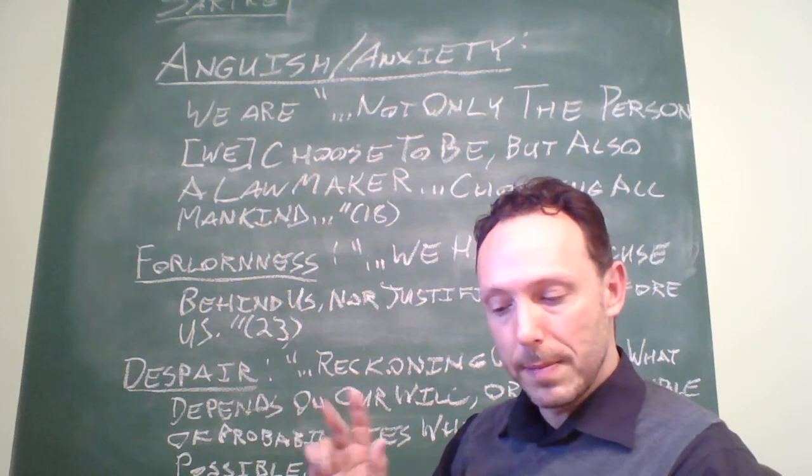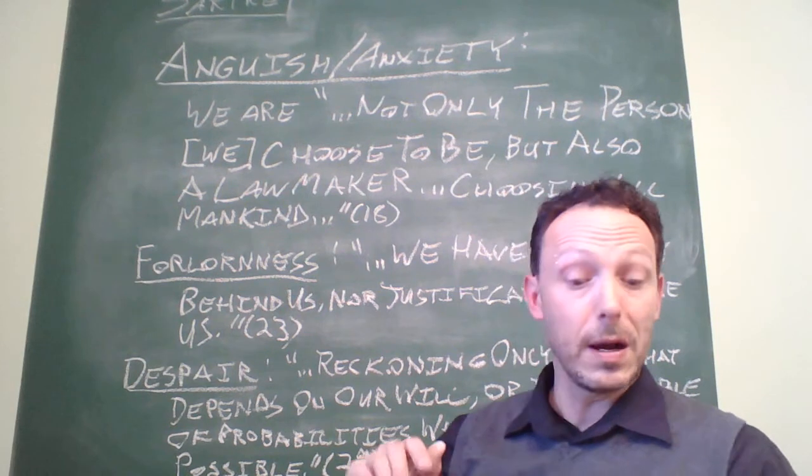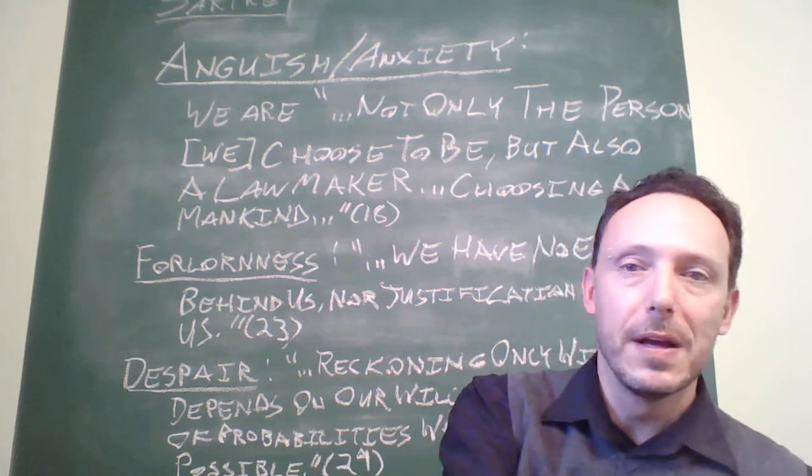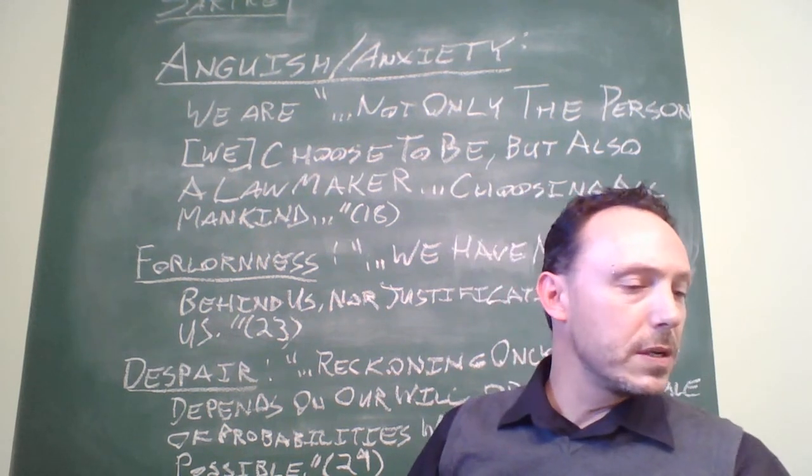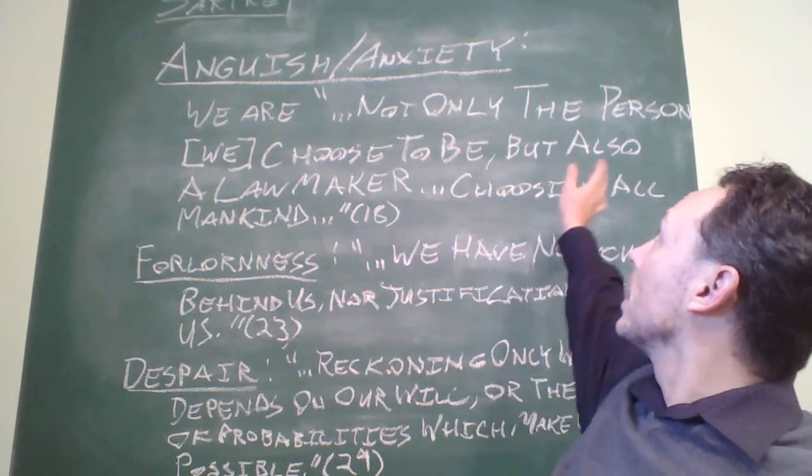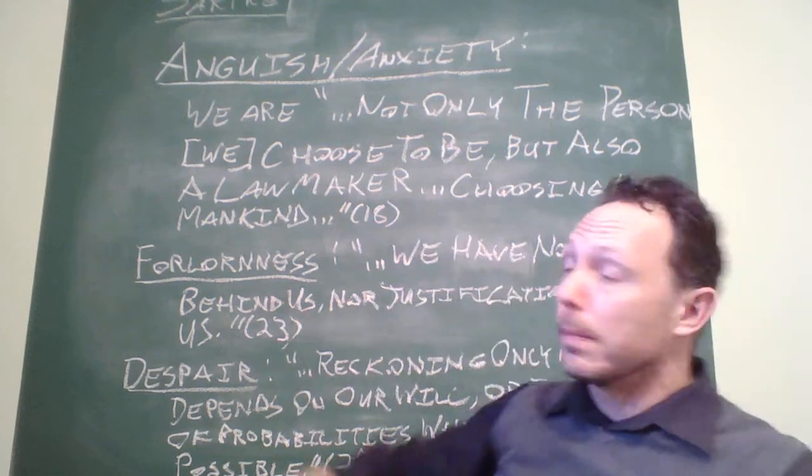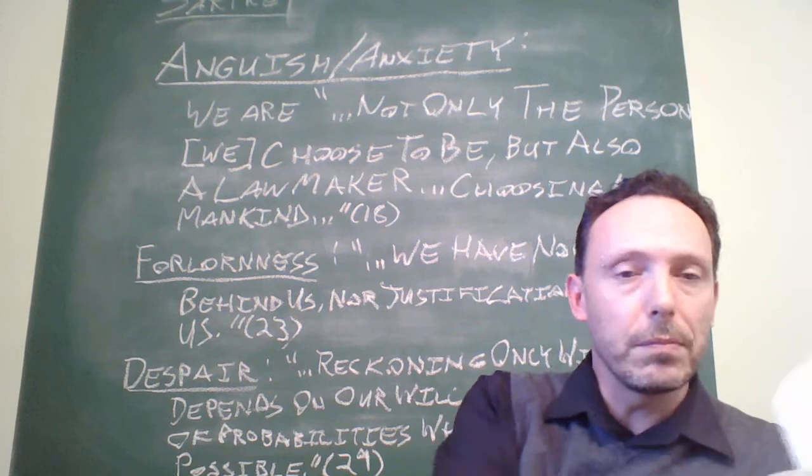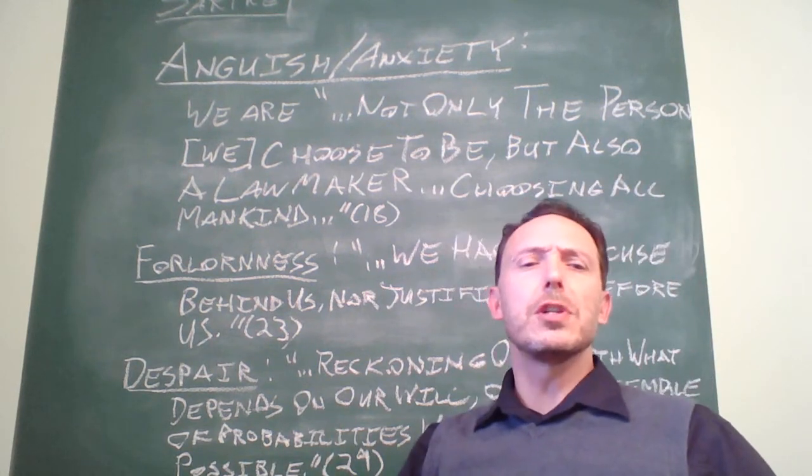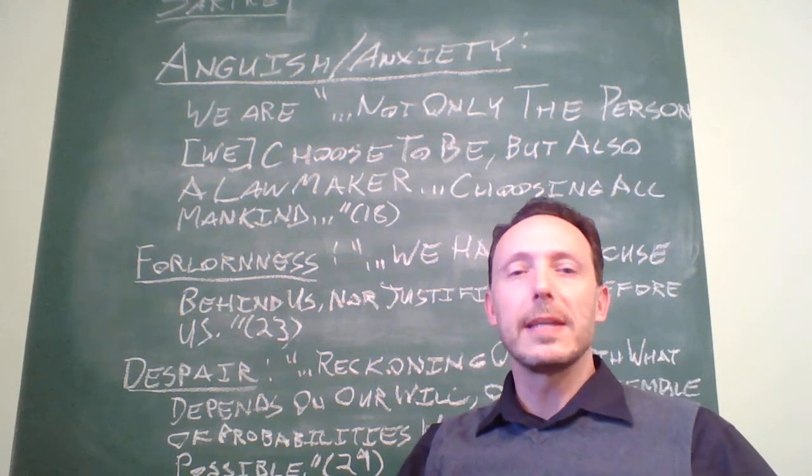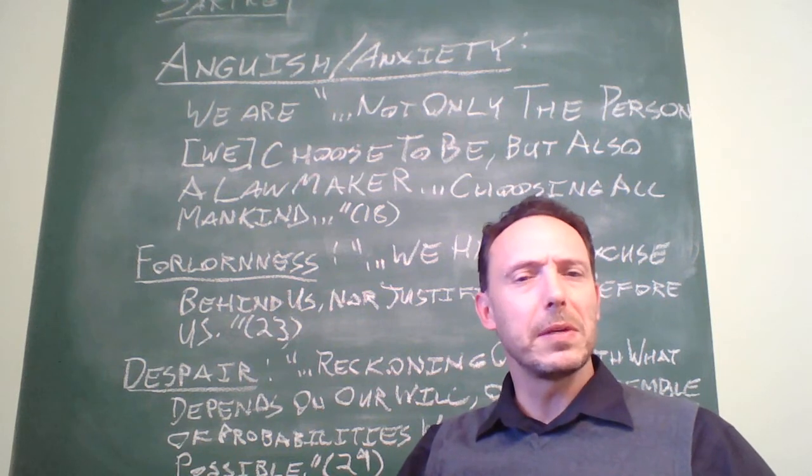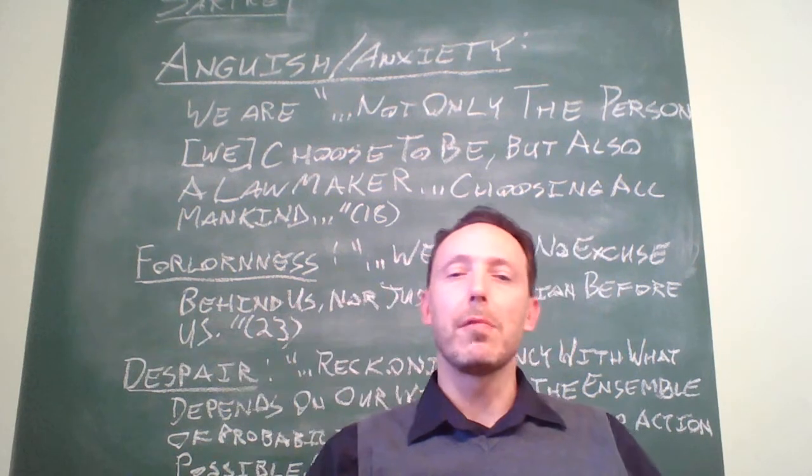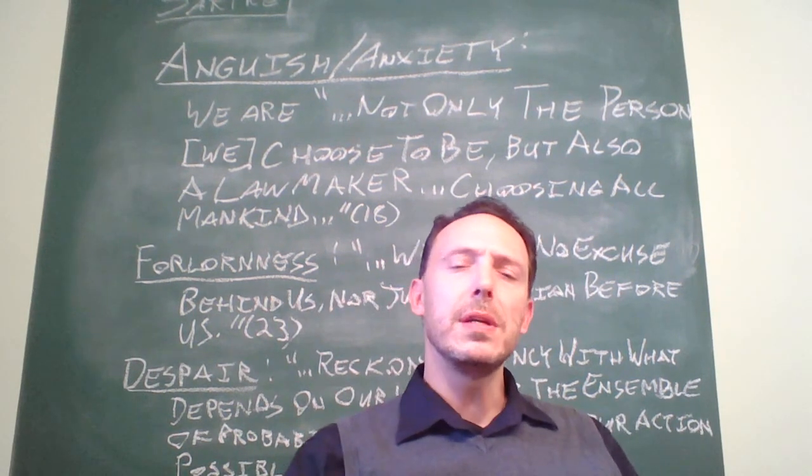Of course there are many people who are not anxious but we claim that they are hiding their anxiety, that they are fleeing from it. Now effectively, it's the word lawmaker that should send an alarm bell off because we've seen a position somewhat like this in the past in Immanuel Kant, with regard to that transition between the first and second formulation of the categorical imperative.